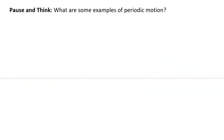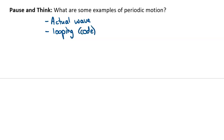Some examples of periodic motion: an actual wave repeats as it travels through space — waves coming from behind a boat are repeating waves. In coding, looping is an example where things repeat over and over until the loop breaks. Sound waves are also examples of periodic motion.